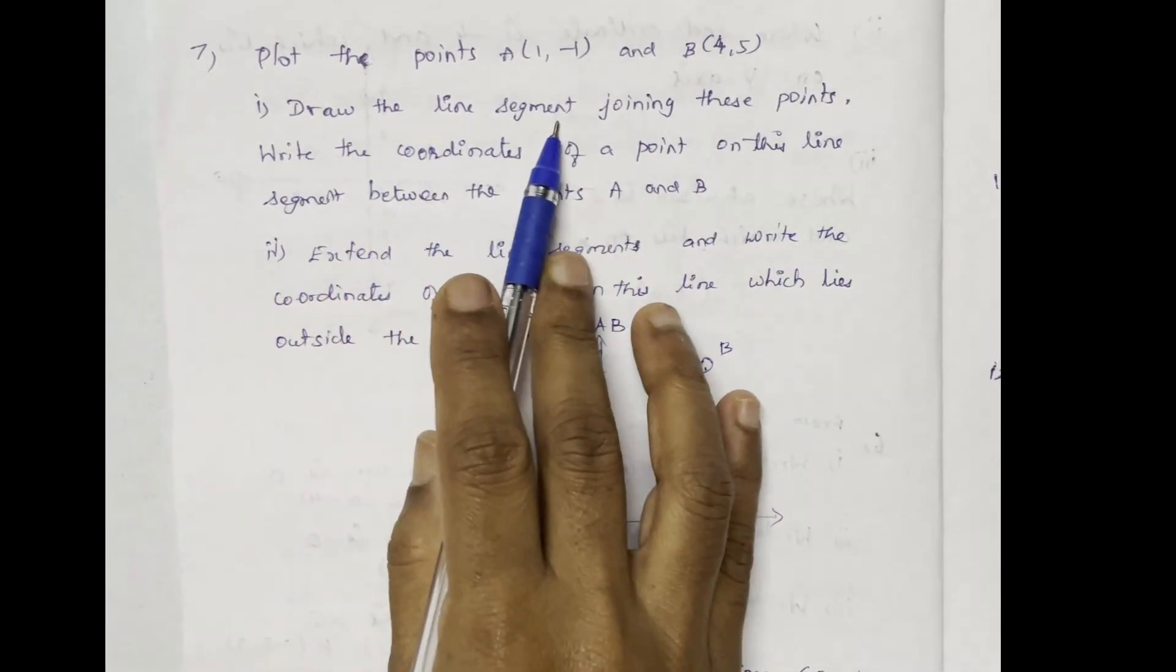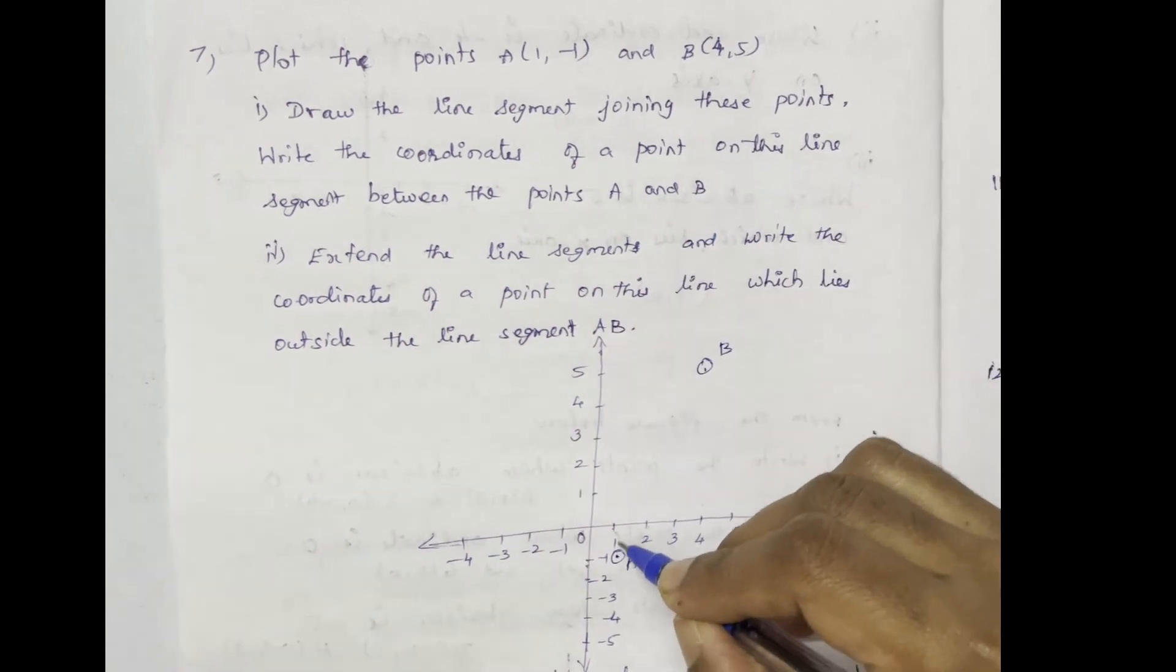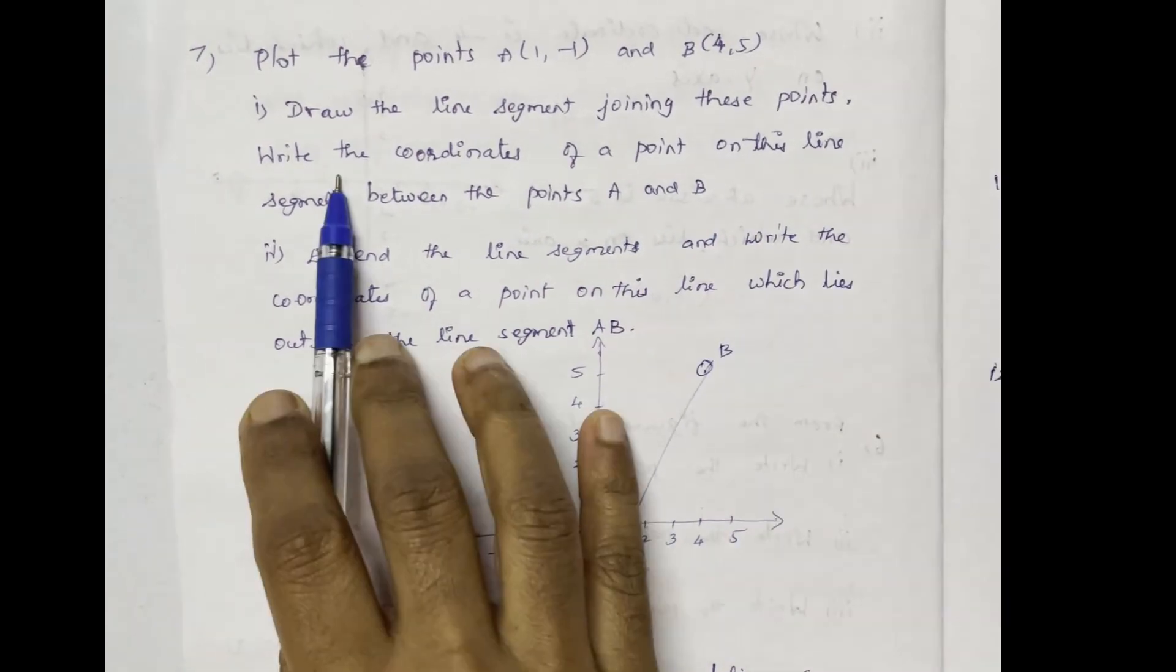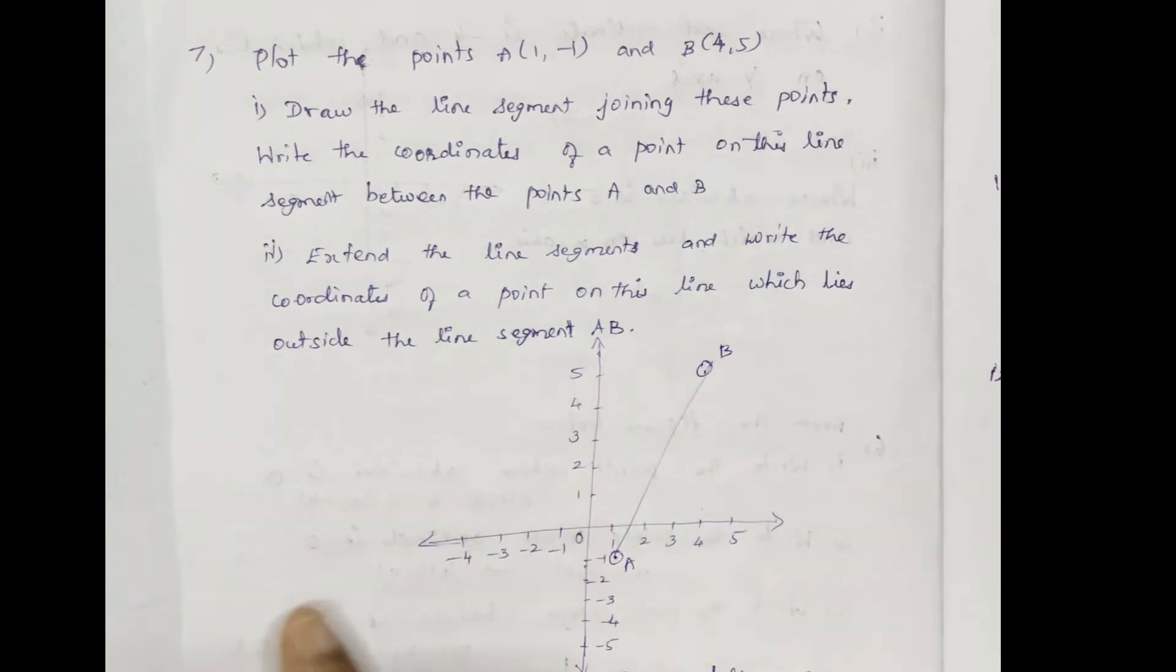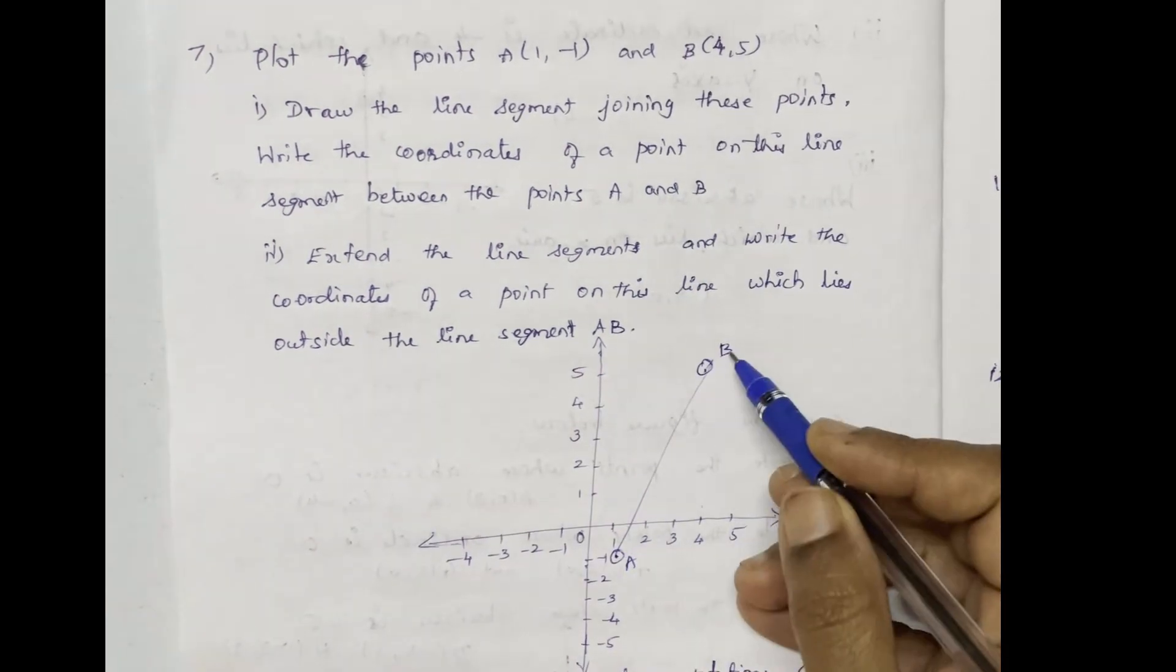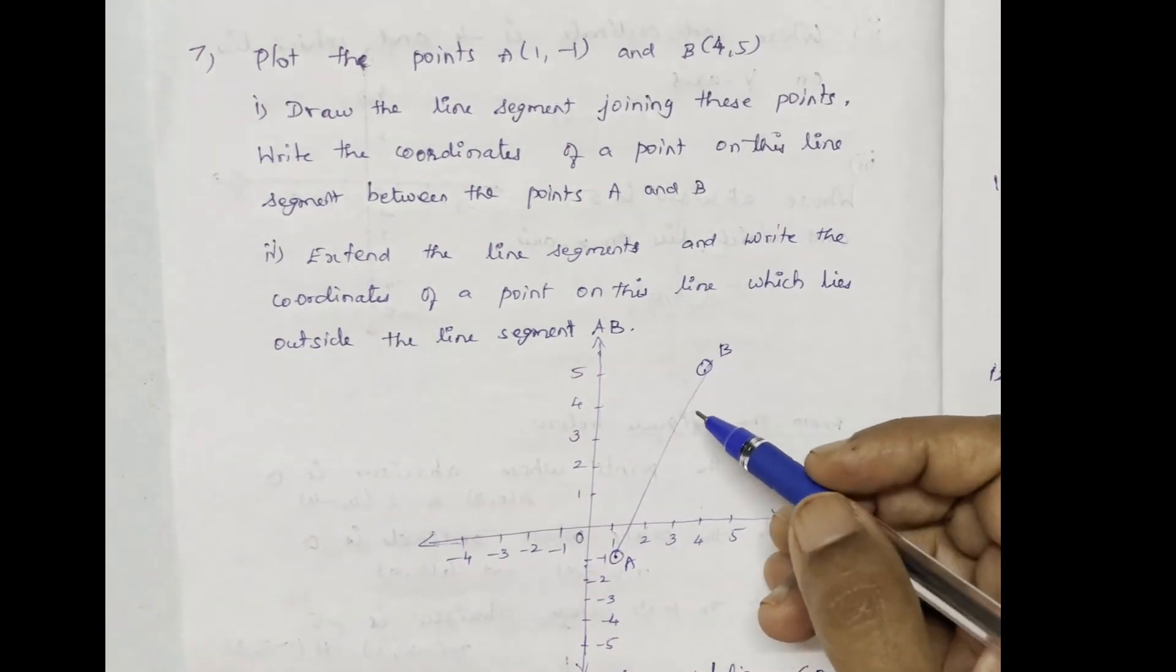Draw the line segment joining these points. Write the coordinates of the point on this line between A and B. Mark the points.